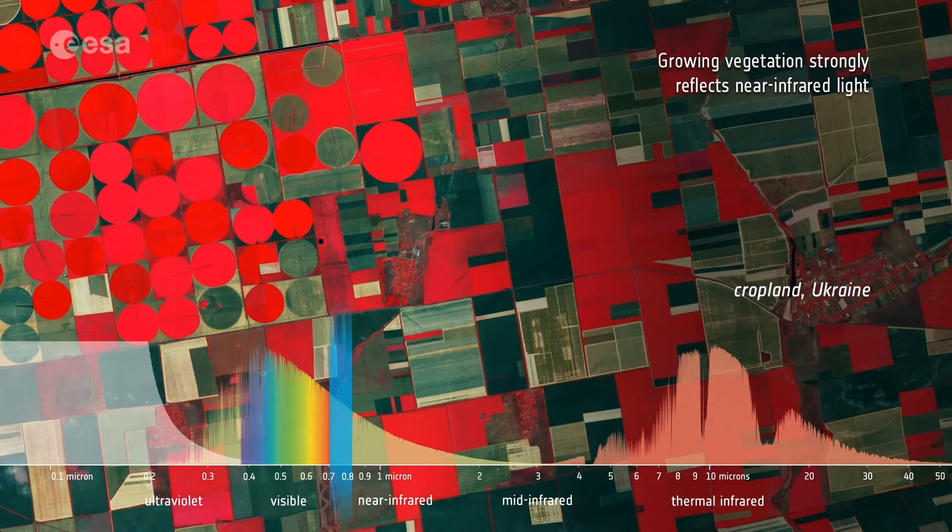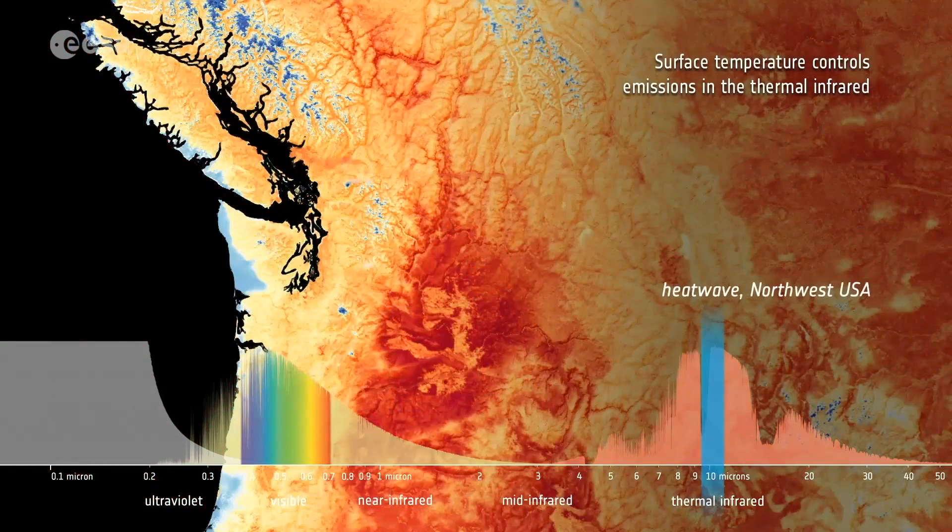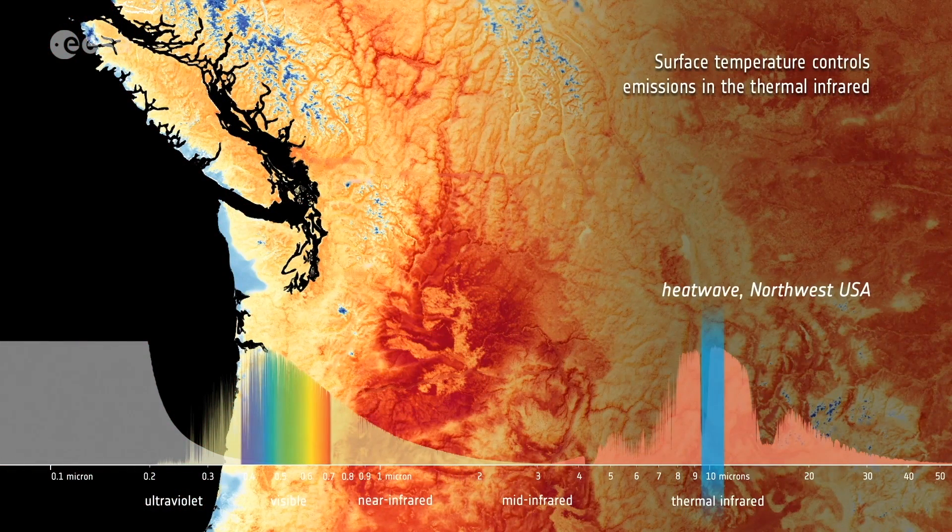Growing vegetation strongly reflects near-infrared light. Surface temperature controls emissions in the thermal infrared.